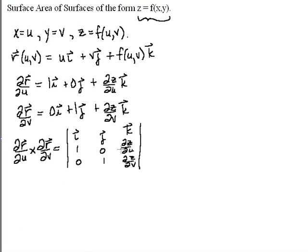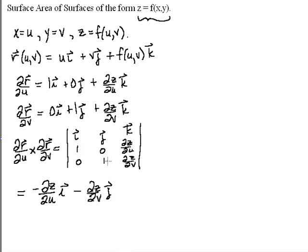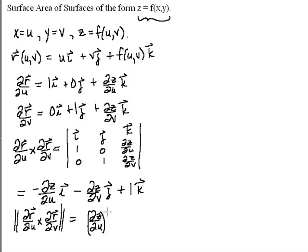The coefficient of i would be 0 minus ∂z/∂u, so negative ∂z/∂u·i. For j, we have ∂z/∂v minus 0, and since we always subtract j, that's negative ∂z/∂v·j. For k, we get 1 minus 0, which is plus 1·k. The norm of this is going to be the square root of (∂z/∂u)² plus (∂z/∂v)² plus 1.